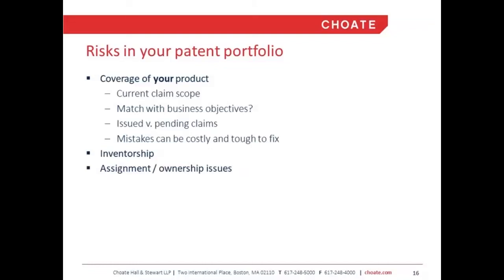The patenting process is long and drawn out, and a portfolio may balloon from one or two applications covering the basic invention to a whole portfolio of interrelated patents. It's easy to lose focus and get sidetracked — maybe going offensive first to see how broad a coverage you can get and spook a competitor, while forgetting to protect your own basic product. Mistakes can sometimes be fixed through pending applications or reissue applications, but are often difficult and costly to fix, and sometimes not possible at all.